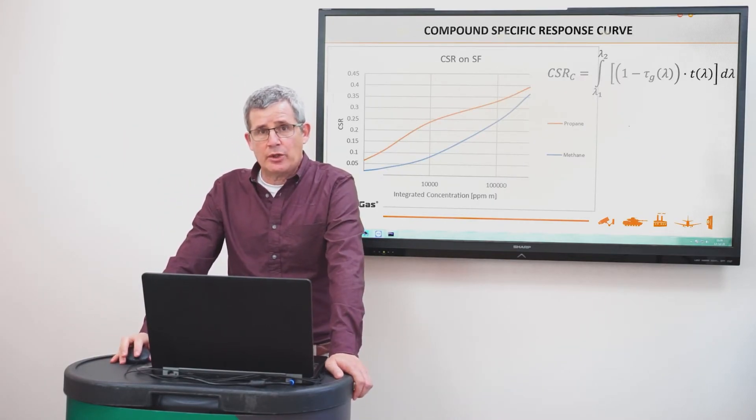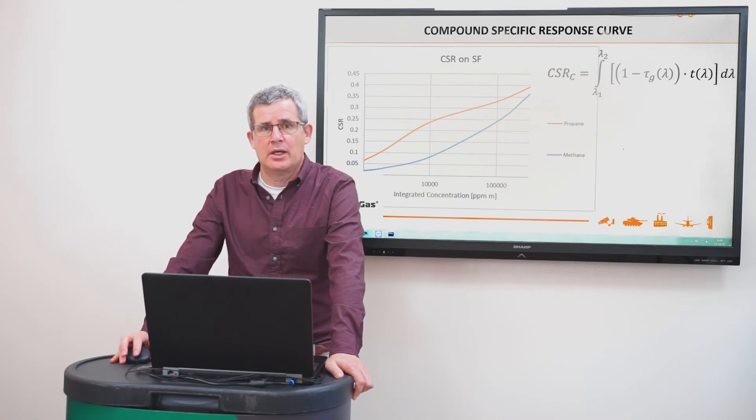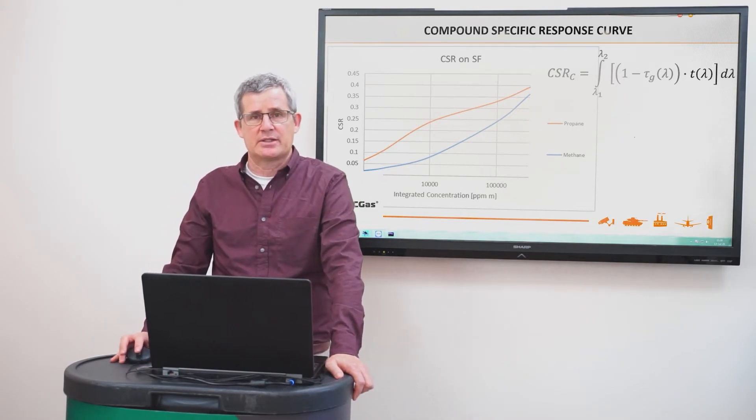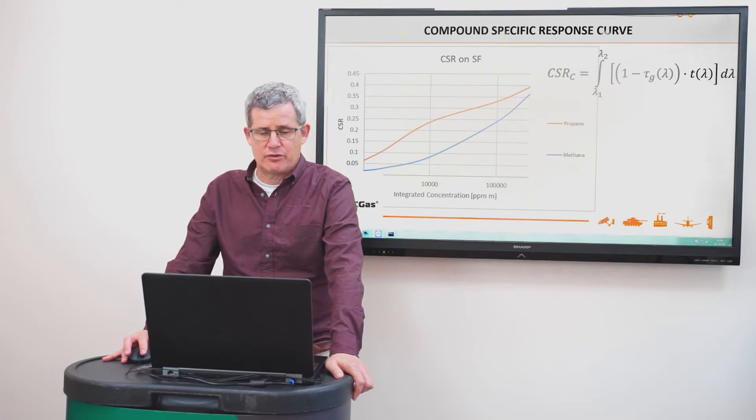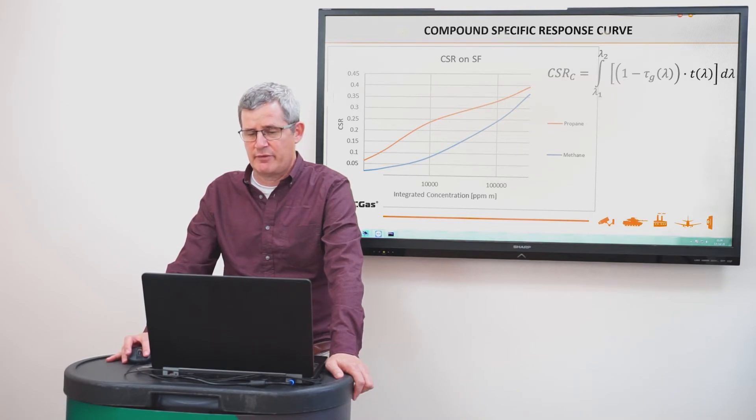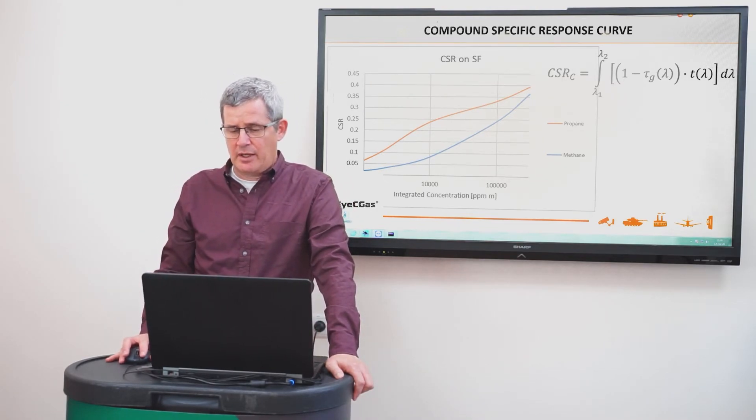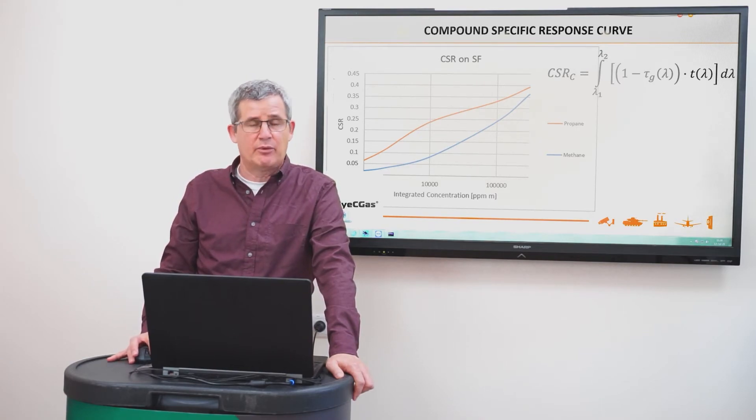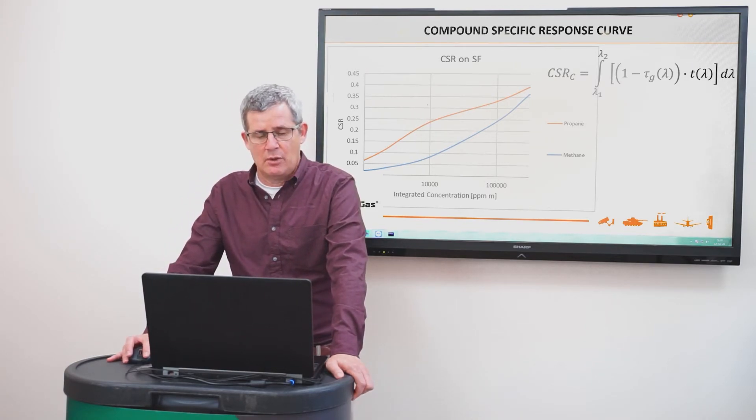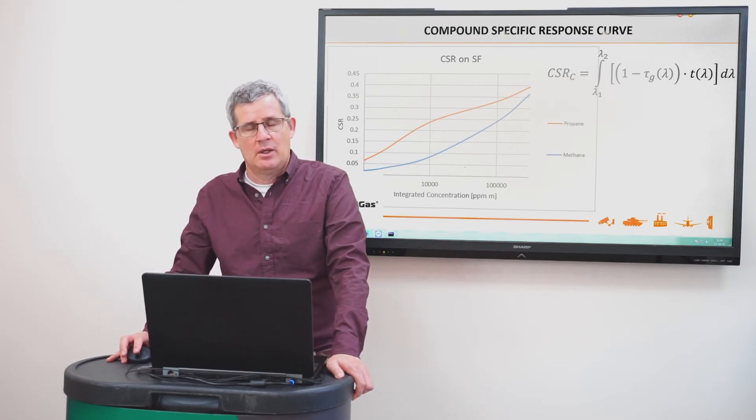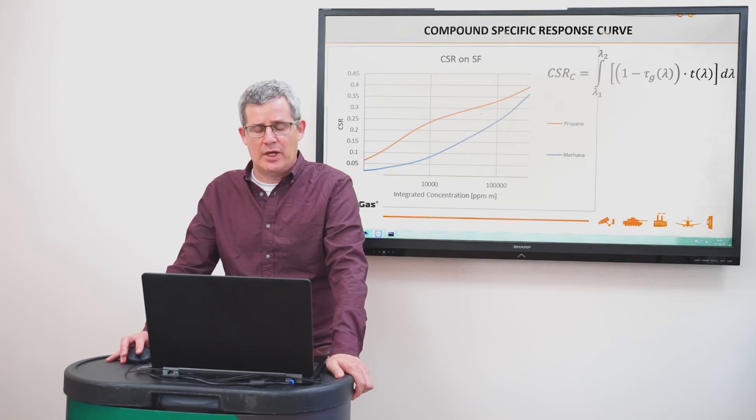So in order to have in our algorithm some relationship between concentration path lengths and the CSR, we plot for each compound in different concentration, this integration on the filter of the compound specific response spectrum times the transmission. And we get here an example for propane and methane. And you can see two things about these two curves: one, that they are very nonlinear, and the other is that they are very different from each other. So we calculate for each compound inside our software package, we calculate this curve and we use this.